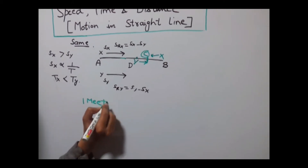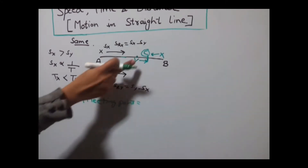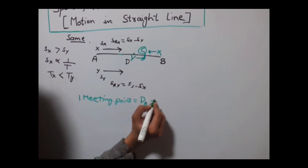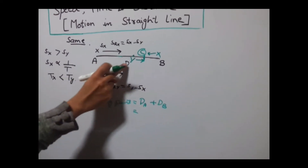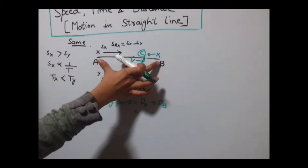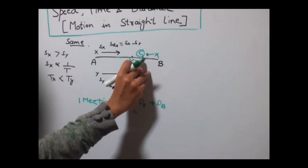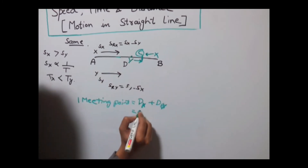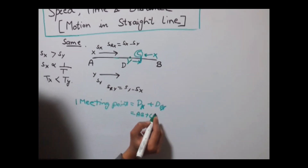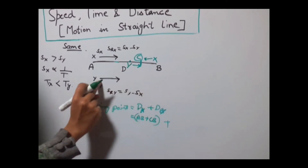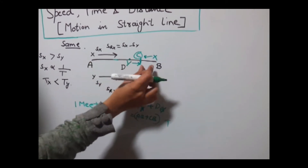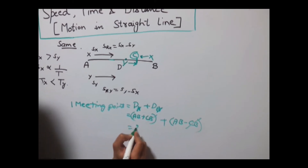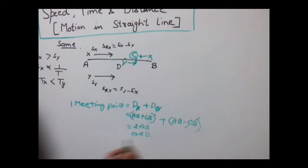At the first meeting point, the total distance covered by A and B would be distance covered by A plus distance covered by B. Distance covered by object X is AB plus CB, and distance covered by object Y is AB minus CB. Adding these: AB plus CB plus AB minus CB gives us 2AB, or 2D as the total distance covered at the first meeting.